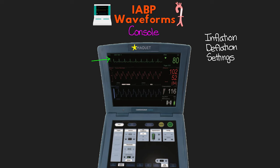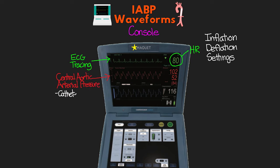I want to point out a few important parts in the top display screen. At the very top, in green, you're going to see your patient's ECG tracing. To the right of this tracing, you'll see your patient's heart rate — in the example here, it is currently green. Below that, in red, is going to be your patient's central aortic arterial pressure waveform. This waveform is actually coming from the balloon pump catheter tip, using either the pressure lumen or a fiber optic sensor. To the right of this waveform, you will see the values for systolic, diastolic, and mean pressures.